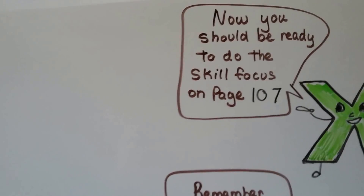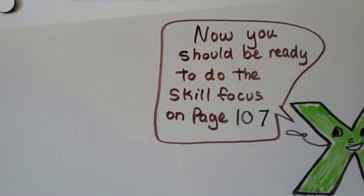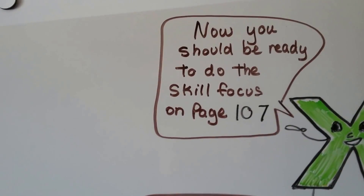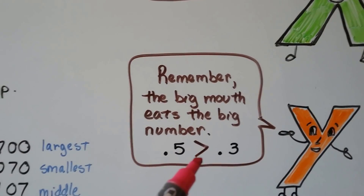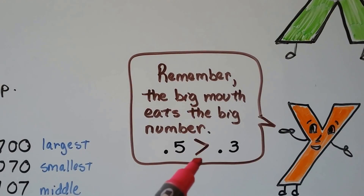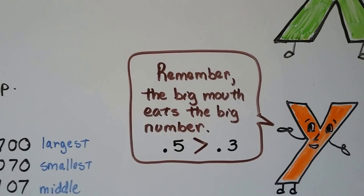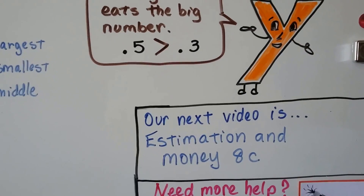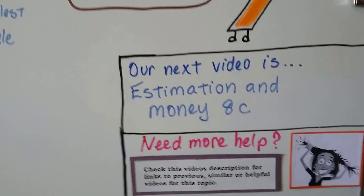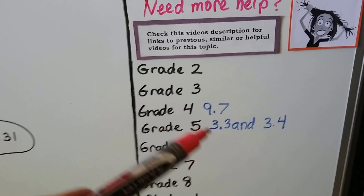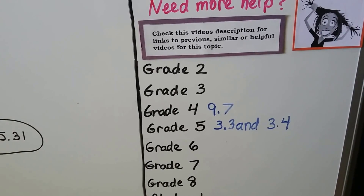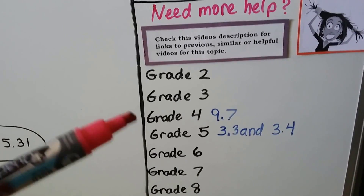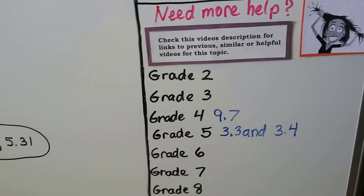Now, in the last video I said the skill focus was on page 107, and it was really page 105 — I'm sorry about that. This one is on page 107. I make mistakes sometimes. And remember that for the less than and greater than signs, the big mouth eats the big number — it faces the bigger number. Our next video is estimation and money. And if you need more help, there are three videos that are very helpful about comparing decimals, putting them in order, and rounding.